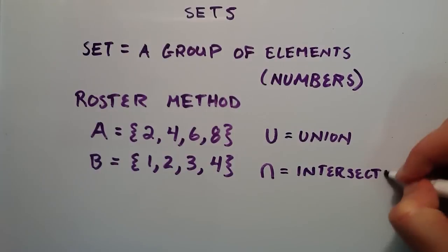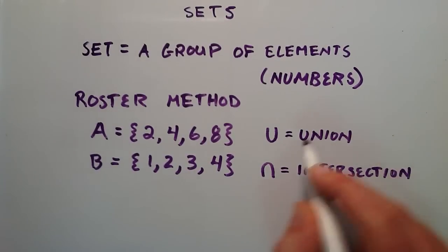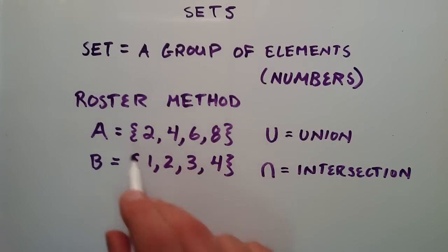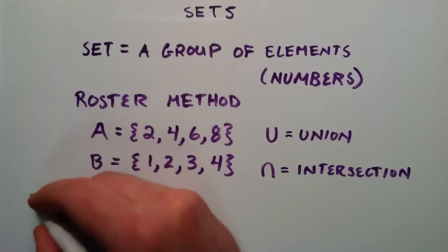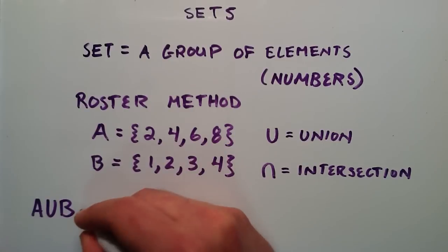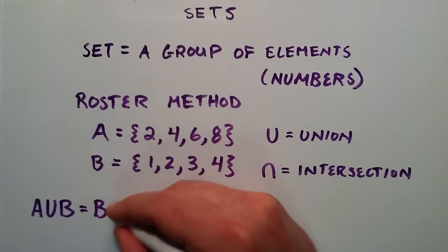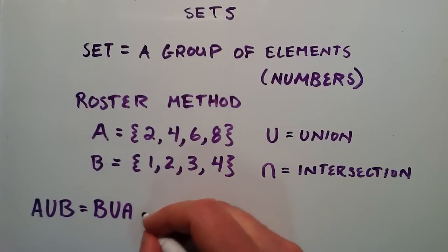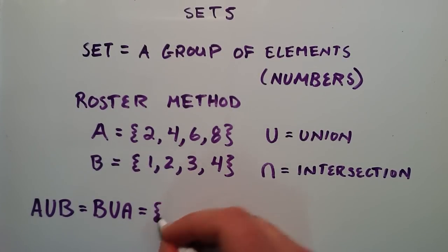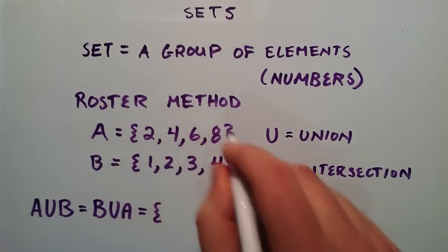A union of two sets is a set that contains all the elements in both of the sets. For example, if we take A union B, we could also write B union A. It doesn't matter which order we write the A's and B's. It's the same set. This is basically the set of all the elements in A and B.